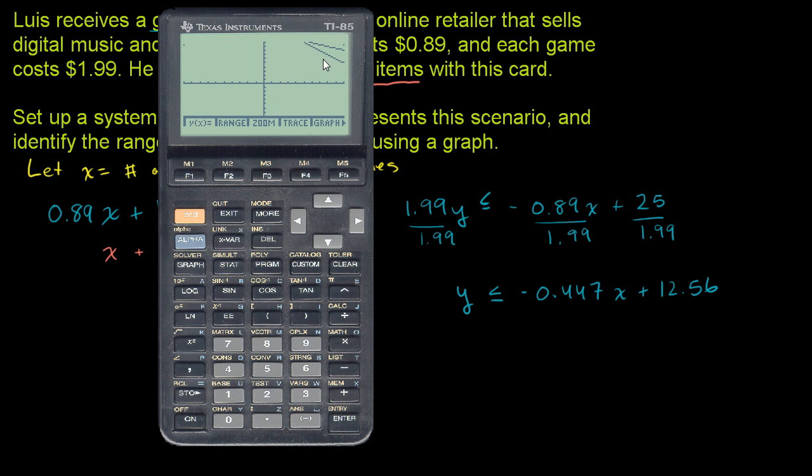It looks like we're out of the range where we should be, so let me change the range to the positive quadrant, which makes sense because he can only buy positive units. Let's make the minimum x value 0, maximum x value 20, x scale 1. The minimum y value is 0, y max 20, and y scale 1. Now let's graph it.